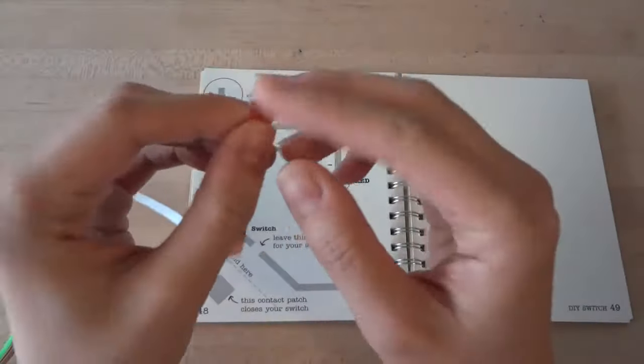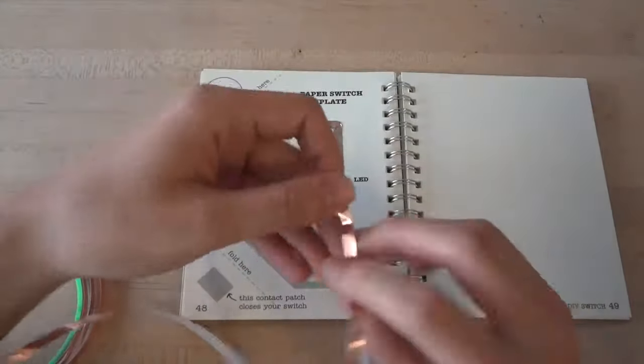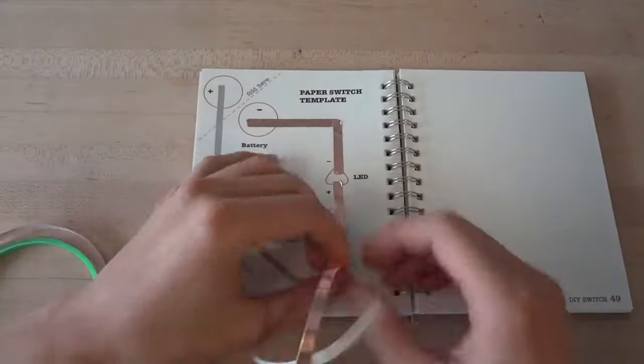First, stick conductive foil over the gray lines on your template. Remember to fold your foil at the turns, and watch out for the copper tape, as it can be sharp.